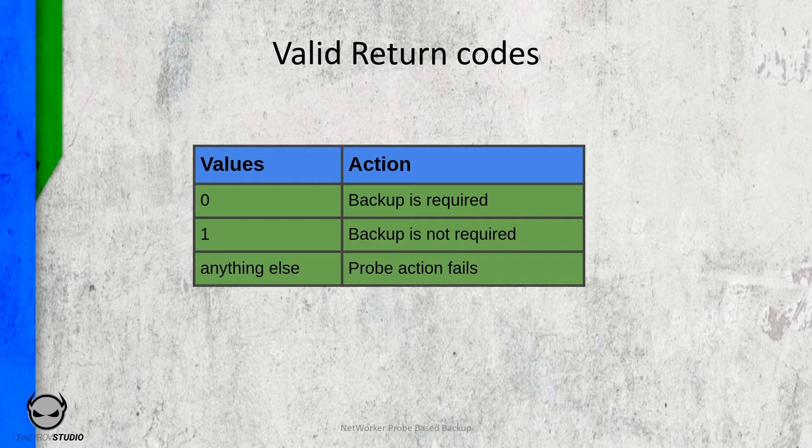Now there is an argument stating that return code one should also indicate a failure because the backup is not done. But again, if a return code of zero or one is returned, it indicates that the script has returned a value defined by the user to determine if the backup has to run or not. What are your thoughts on this argument? Let me know in the comments below.